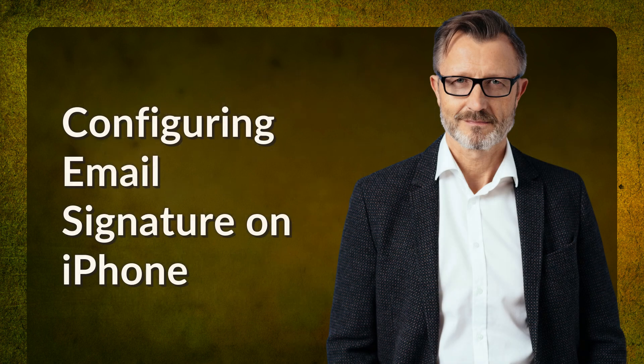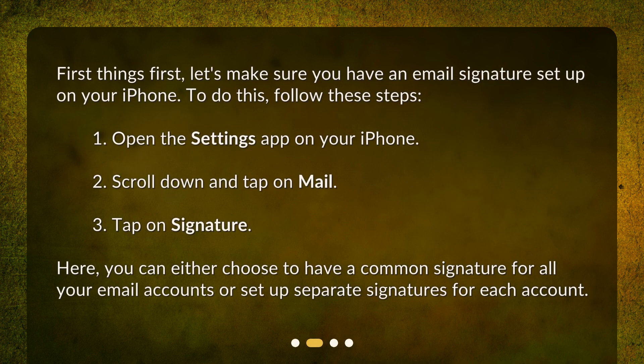Configuring email signature on iPhone. First things first, let's make sure you have an email signature set up on your iPhone. To do this, follow these steps: Open the Settings app on your iPhone, scroll down and tap on Mail, then tap on Signature. Here, you can either choose to have a common signature for all your email accounts or set up separate signatures for each account.